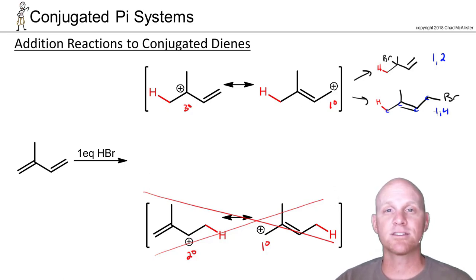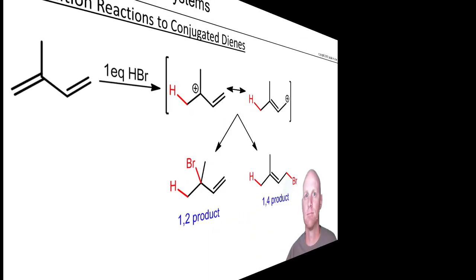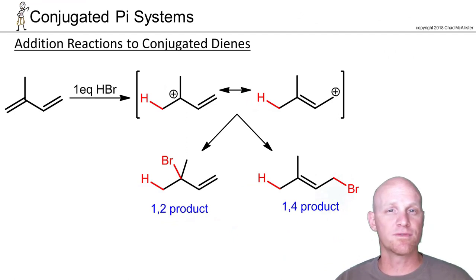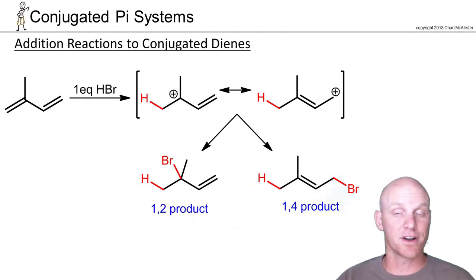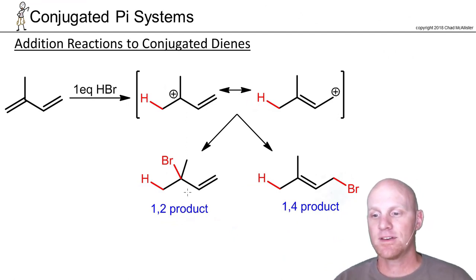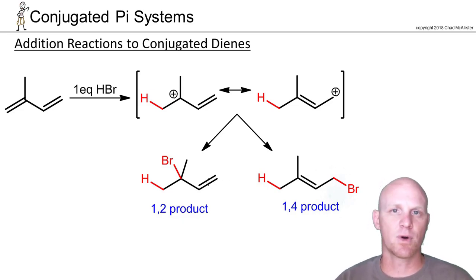It turns out both products have a chance of being the major product depending on the conditions. Here are the 1,2-product and the 1,4-product drawn out. The question is how do you decide which is the major one — and again, it all depends on the conditions.